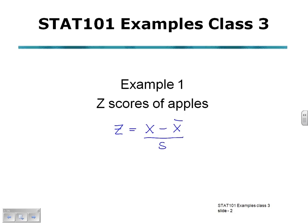X bar is our sample mean and S is our sample standard deviation. So our Z-score will give us a measure of the number of standard deviations our observation is away from the mean.